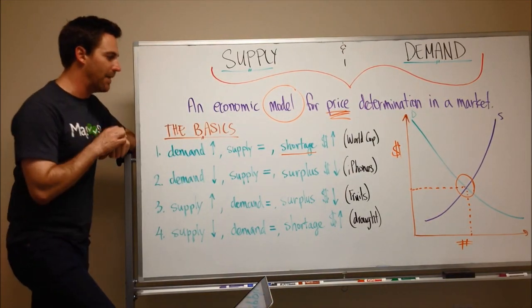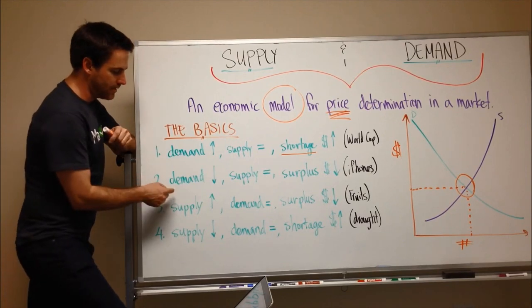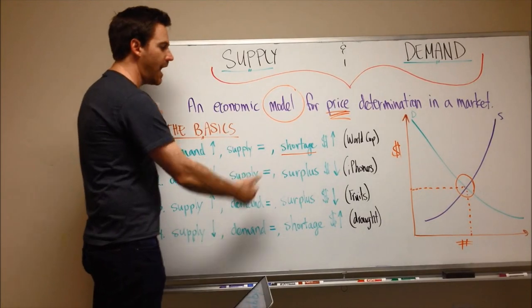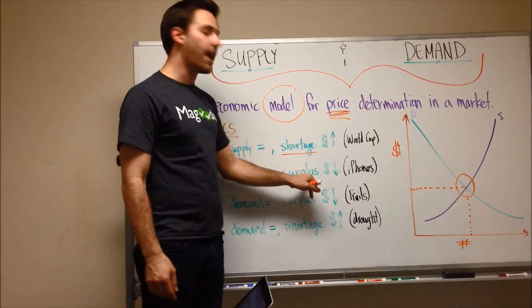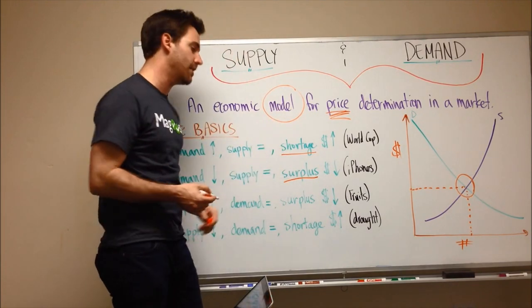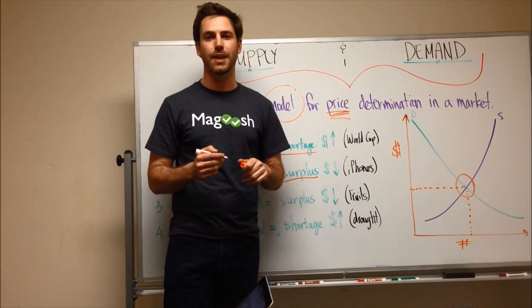The second basic concept is if demand goes down for a product, supply remains the same, then you're going to have what's called a surplus, which means you have too many of the products, then price will go down.